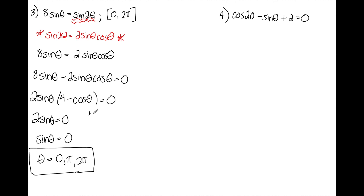On the right side, adding cosine over gives 4 equals cosine theta. Since cosine theta must be between negative 1 and positive 1, and 4 is outside that interval, this side has no solution. So my three answers for number 3 are 0, π, and 2π.